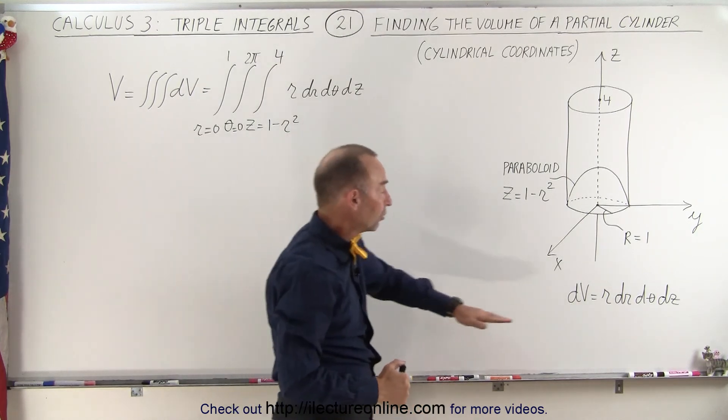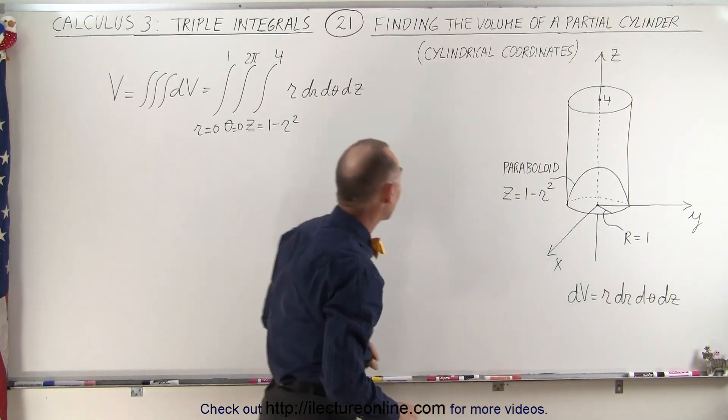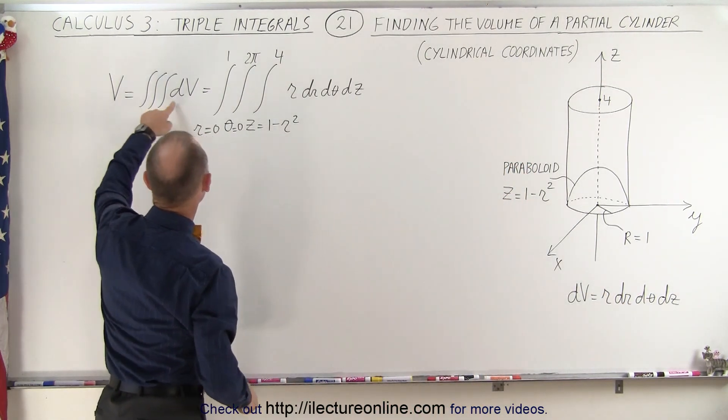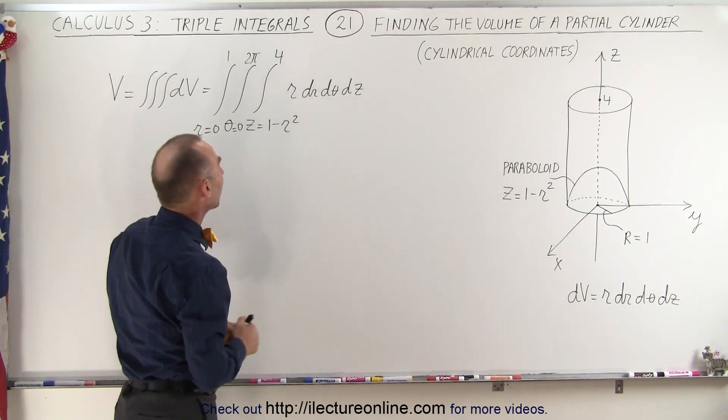Since we're using cylindrical coordinates, the volume element is r dr dθ dz. And so when we try to integrate the dv, that becomes r dr dθ dz and the limits determine the volume.